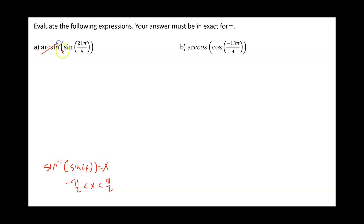You have an inverse sine and sine, so this will equal to 21 pi over 5. However, our output 21 pi over 5 is not between negative pi over 2 and pi over 2.